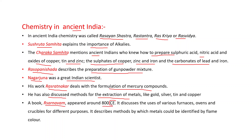A book called Rasarnava appeared around 800 CE — CE stands for Current Era. It discusses the usage of various furnaces, vessels, and crucibles for different purposes. It also describes methods by which metals could be identified by flame color.